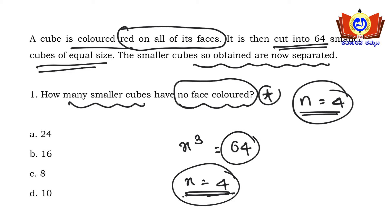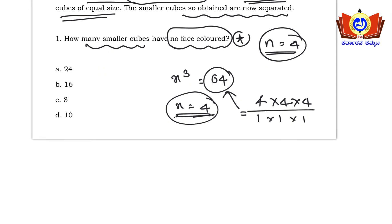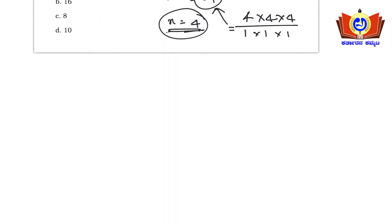The total number of cubes obtained equals the size of the larger cube (4×4×4) divided by the size of the small cube (1×1×1), which gives 64. So n will be 4 here.